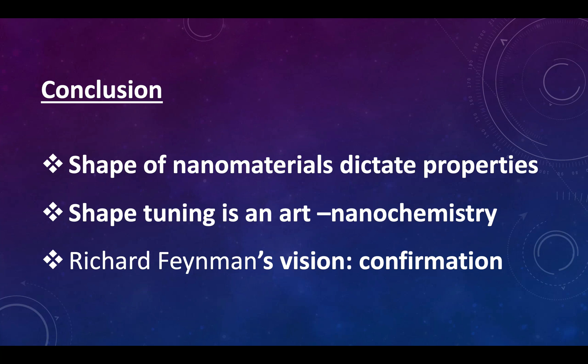This art clearly confirms Richard Feynman's vision, stated in 1959, that one day we would be able to control and manipulate things at a very small molecular level — to build whatever we want in whatever shape and size. With the tools available in synthetic chemistry, colloidal chemistry, and wet chemistry, we can easily interpolate between different shapes of particular nanoparticles. Thank you for watching.